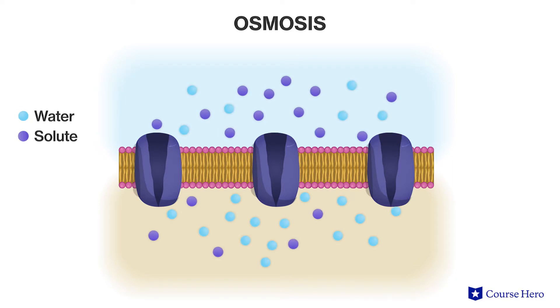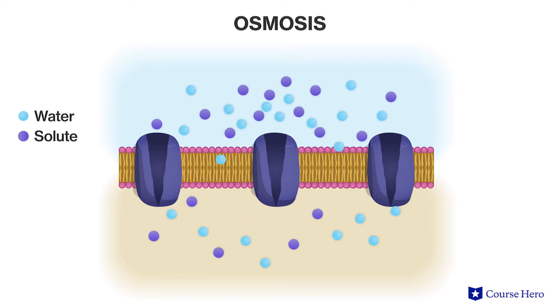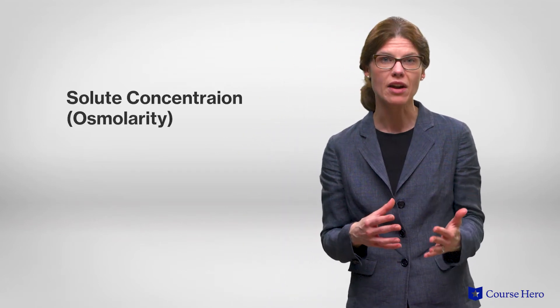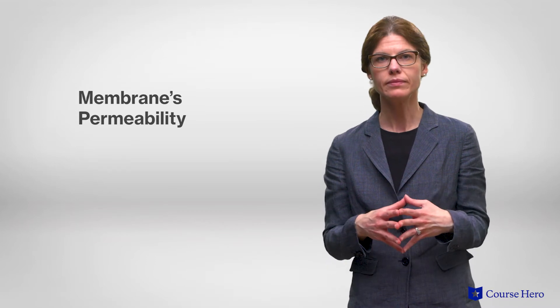The direction of water movement is based on the relative concentration of solutes on either side of the membrane. Water will move from where the solute concentration is lowest to where it is highest, or more concentrated, until an equal solute concentration is reached on both sides. When thinking about the behavior of a cell in a solution, we have to consider both the solute concentration, or osmolarity, and the membrane's permeability. Both of these factors contribute to tonicity — the ability of a solution to cause a cell to gain or lose water.